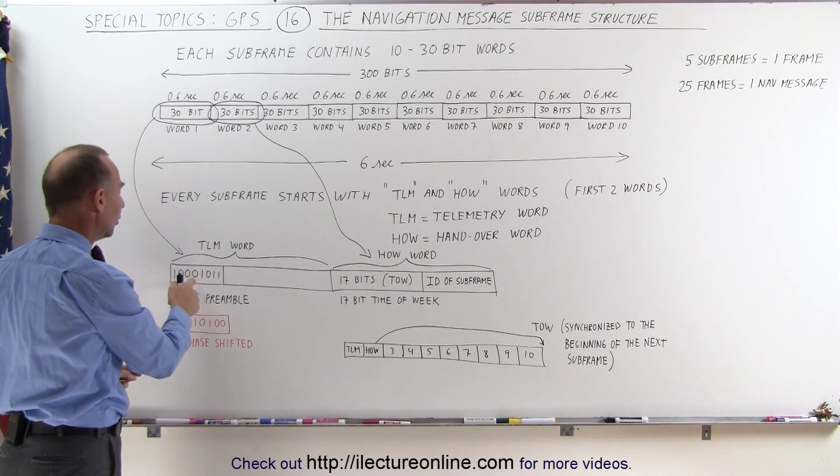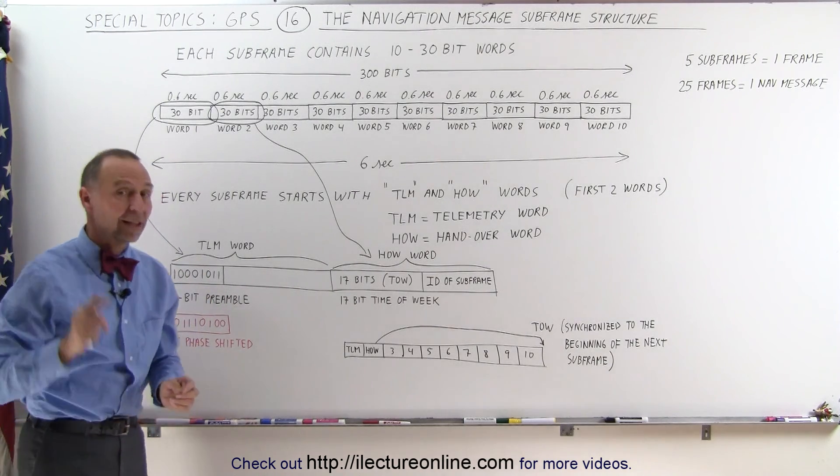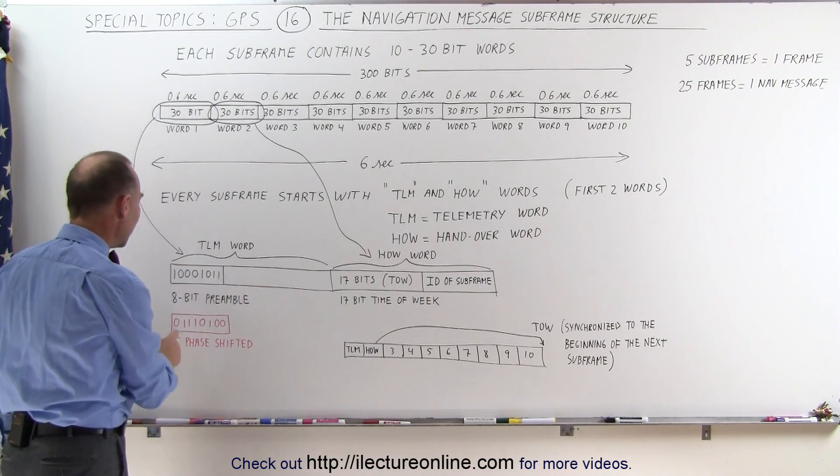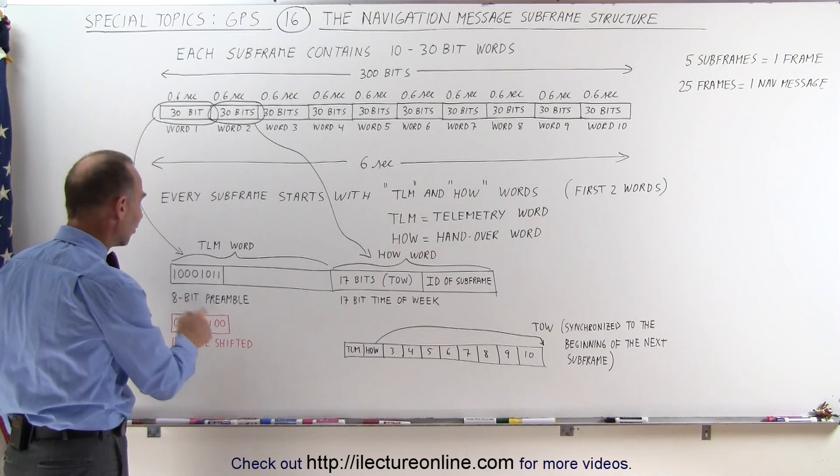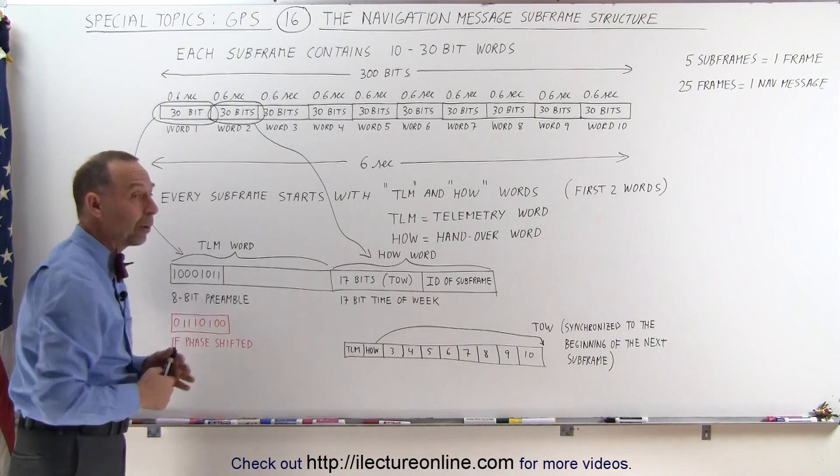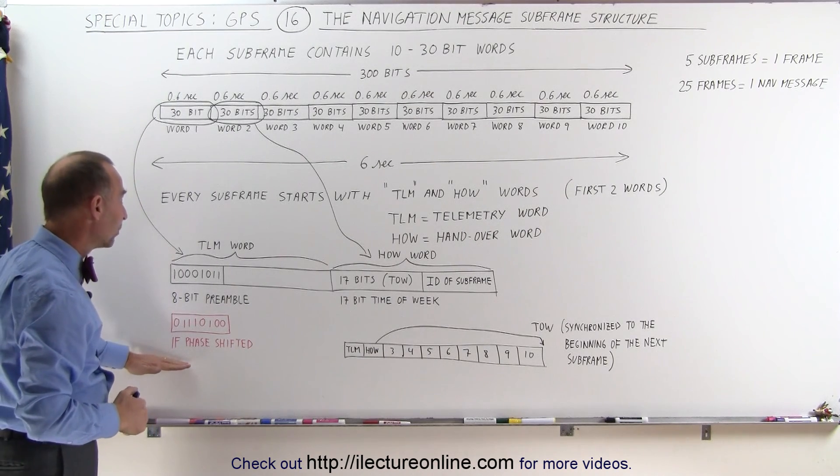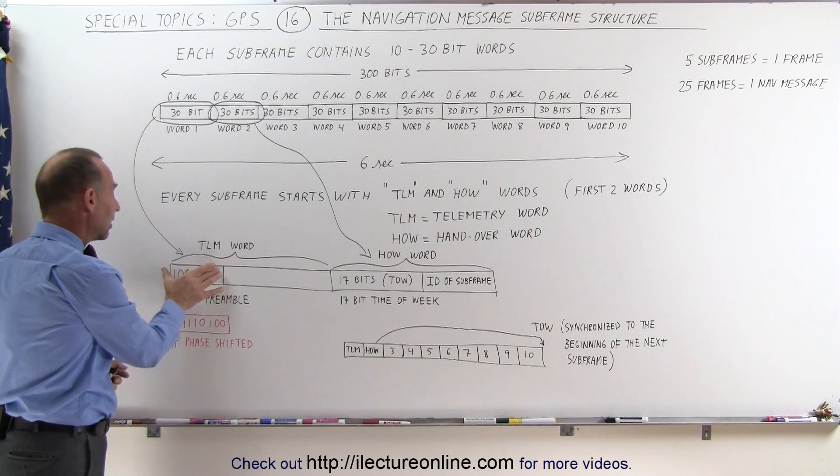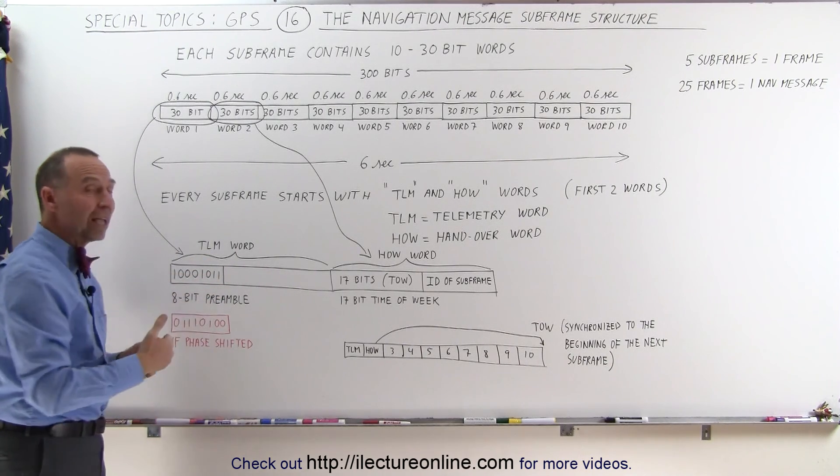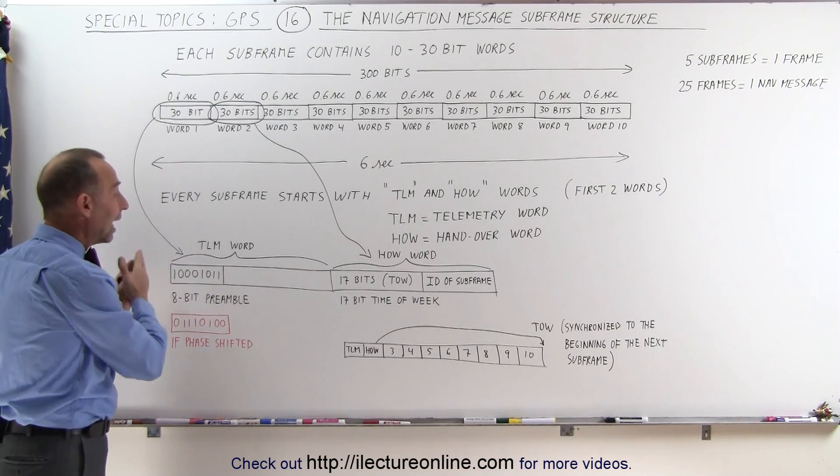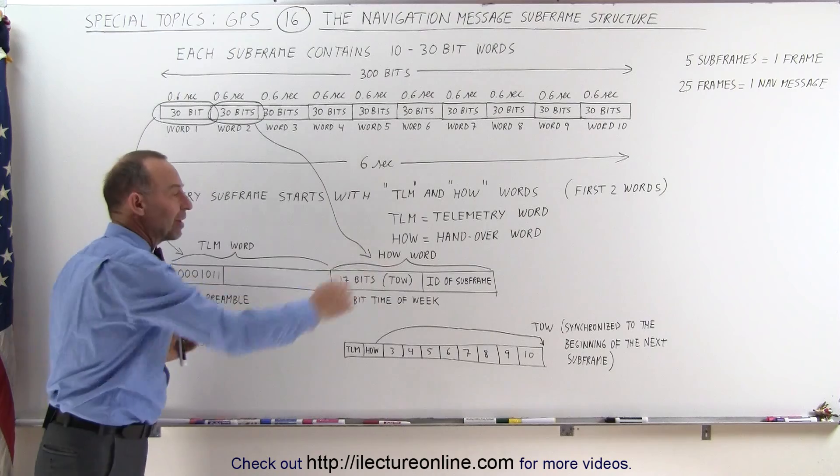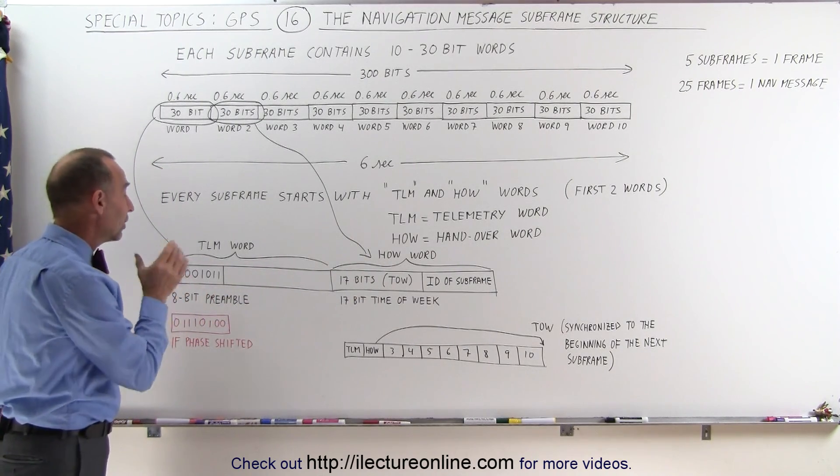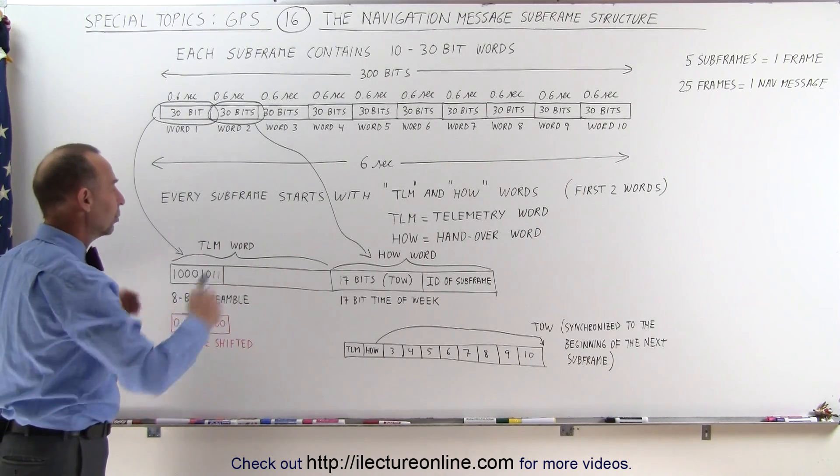It's a 1 0 0 0 1 0 1 1. Unless there's been a 180 degree phase shift, and then the first 8 bits will be 0 1 1 1 0 1 0 0. So that's what we then have if the message is phase shifted. The receiver needs to go look for that preamble and recognize the first 8 bits, either like this or like this, to understand if it's either not shifted or phase shifted, and to know that that is the beginning of the subframe message. So the receiver always keys in to those first 8 bits to know that we're now dealing with a new subframe containing 10 words.